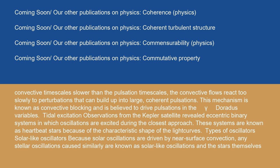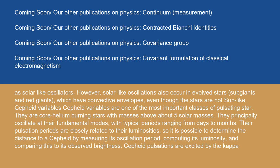Types of oscillators — Solar-like oscillators: because solar oscillations are driven by near-surface convection, any stellar oscillations caused similarly are known as solar-like oscillations. Solar-like oscillations also occur in evolved stars — subgiants and red giants — which have convective envelopes, even though the stars are not sun-like. Cepheid variables are one of the most important classes of pulsating star. They are core helium-burning stars with masses above about five solar masses. They principally oscillate at their fundamental modes, with typical periods ranging from days to months. Their pulsation periods are closely related to their luminosities, so it is possible to determine the distance to a Cepheid by measuring its oscillation period, computing its luminosity, and comparing this to its observed brightness.